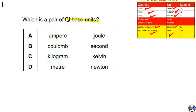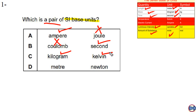We need to find the pair of SI base units. Amps is an SI base unit, but Joule is not, so the answer is not E. Coulomb is not an SI base unit; second is. Kilogram is an SI unit and Kelvin is also an SI unit. Meter is an SI unit, but Newton is not. So our answer for this question is C.